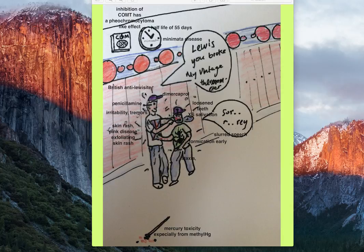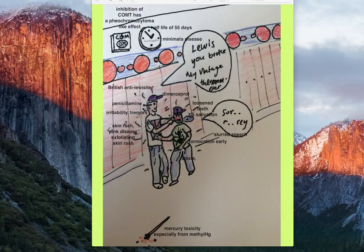The antidotes for mercury toxicity, given in the right situations, are British anti-lewisite and penicillamine. The British student beating up Lewis represents British anti-lewisite, also called BAL. It's also called dimercaprol, so I've given them two purple distinct caps to remember 'dimer-caprol.' The British student also has a pencil behind his ear — representing penicillamine.